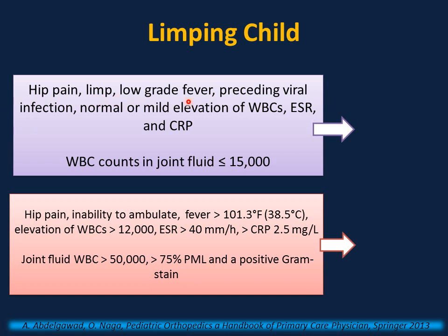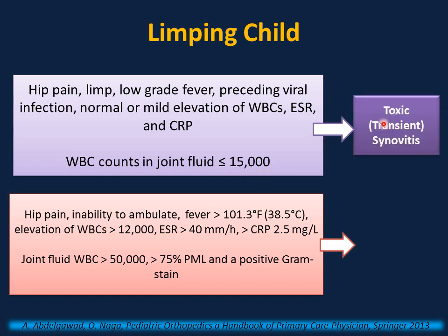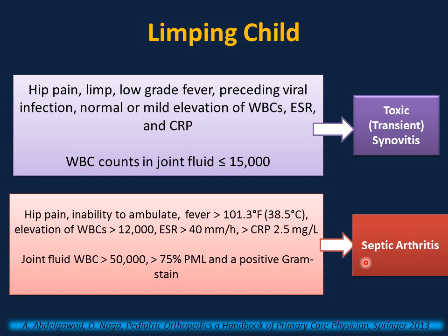If you have a child presenting with hip pain, limp, low-grade fever, preceding viral infection, normal or mild elevation of white blood cells, ESR and CRP, and white blood cell count in joint fluid less than 15,000, the most likely diagnosis is toxic synovitis or transient synovitis. On the other hand, if you have a child with hip pain, inability to ambulate, fever more than 101.3°F (38.5°C), white blood cells more than 12,000, ESR more than 40, CRP more than 2.5, joint fluid white blood cells more than 50,000, more than 75% polymorphs, and a positive Gram stain, the most likely diagnosis is septic arthritis. Once this diagnosis is made or even suspected, immediate notification to the pediatric orthopedic surgeon for surgical drainage and irrigation is required. Delay in treatment can cause rapid and progressive joint destruction. In toxic synovitis, treatment is reassurance and ibuprofen or non-steroidal anti-inflammatory medications.